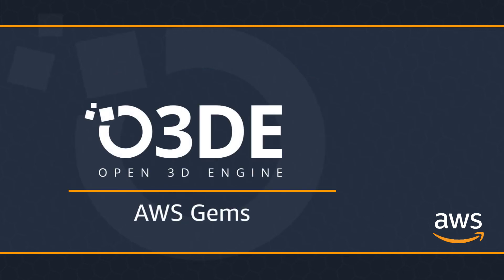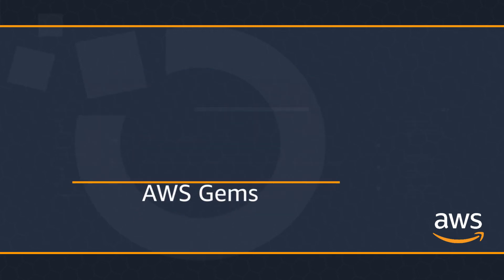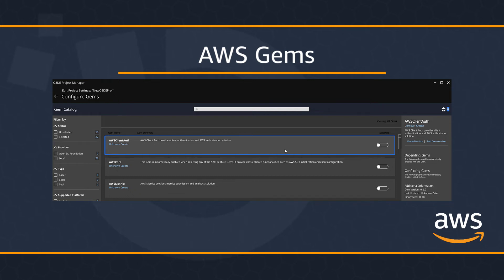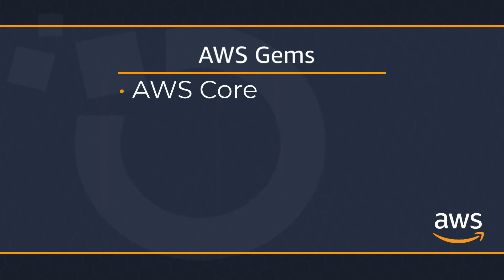The AWS GEM provides sample AWS CDK applications and all the code to utilize them. These GEMs support the modeling, deployment, and communication of your AWS resources. The following AWS GEMs are available: AWS Core, which provides the common mechanisms and essential configuration for all AWS feature GEMs, including credential management, resource sharing, and handling of calls to AWS services. This GEM also includes platform extensions for the AWS SDK for C++.